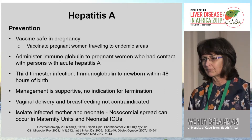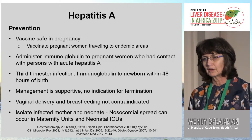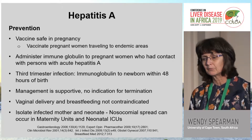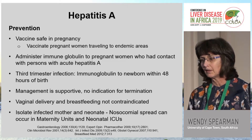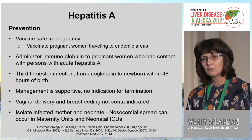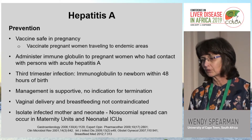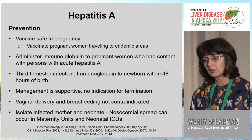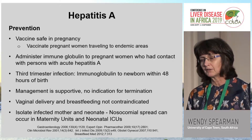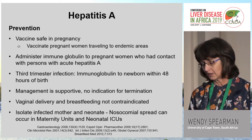Prevention is key. If someone is pregnant and traveling to an endemic area, vaccination should be considered — it is entirely safe in pregnancy. Immunoglobulin should be administered if a pregnant woman has been exposed to hepatitis A. If infection occurs in the third trimester, immunoglobulin should be given to the newborn within 48 hours of delivery. Management is supportive with no indication for termination. Vaginal delivery and breastfeeding are not contraindicated, but the mother and neonate should be isolated as nosocomial spread has been documented in maternity units and neonatal ICUs.